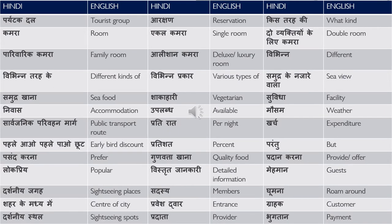पर्यटक दल — tourist group. आरक्षण — reservation. किस तरह की — what kind? For example: What kind of rooms do you have in your hotel? — आपके hotel में किस तरह के कमरे हैं? कमरा — room.